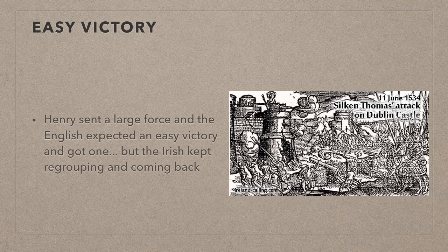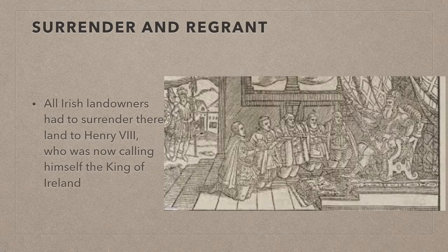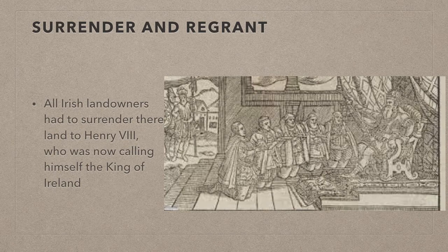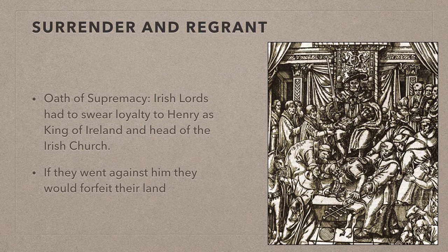But after every summer of fighting in Ireland, the Irish would regroup in the winter and fight again the next summer, and this cost Henry a lot of money. So he came up with a new policy called Surrender and Regrant. This policy meant that all Irish landowners were to surrender their lands to Henry VIII, who took the new title of King of Ireland as opposed to Lord. They were to swear an oath of loyalty to him as King of Ireland and head of the church — called the Oath of Supremacy. If any of the landlords acted against the king or rebelled, they would forfeit their lands.